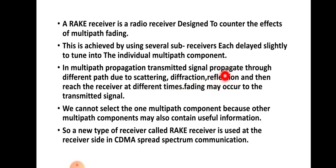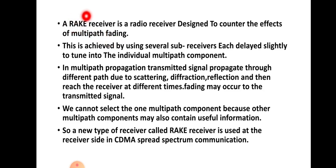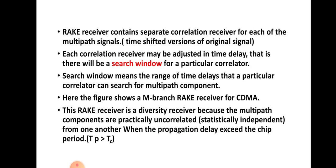At the receiver side, the sum of the signals will be received and the corresponding receiver will multiply the received signal with the corresponding PN sequence - as we have studied in the case of CDMA technique. Once we multiply the PN sequence with the received signal we get the original transmitted signal. In that CDMA receiver, in order to reduce multipath fading, we incorporate a rake receiver. Rake receiver is used at the receiver side in CDMA spread spectrum communication. It is called spread spectrum because we multiply the original message signal with the PN sequence.